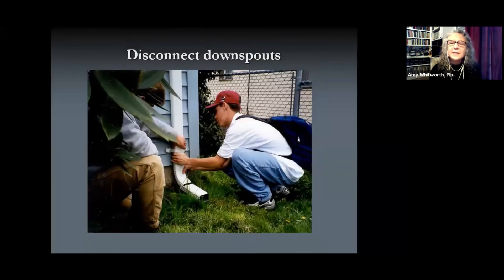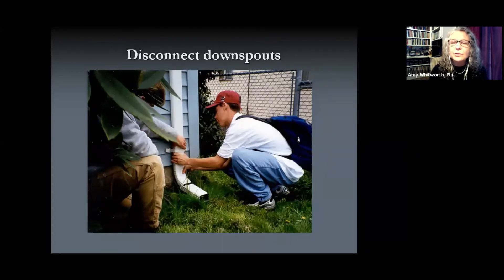The last step is to disconnect your downspouts — or if you already have a disconnected downspout, take the final step and connect the downspout to the rain garden.